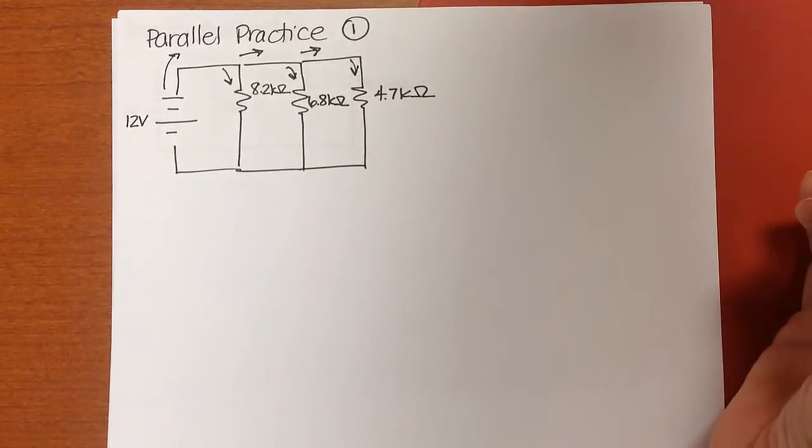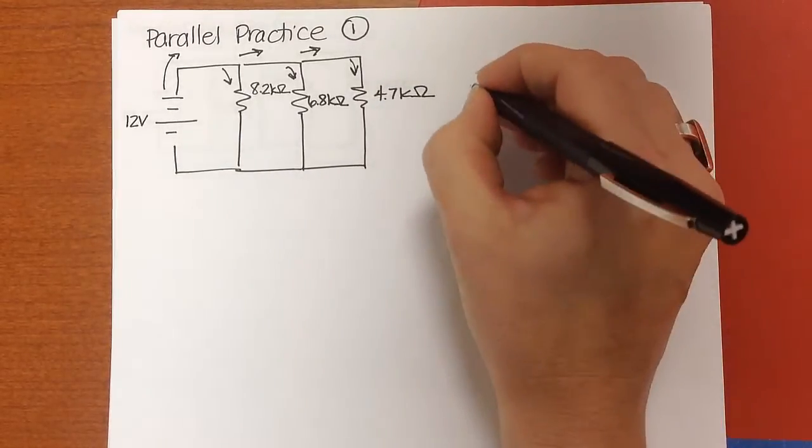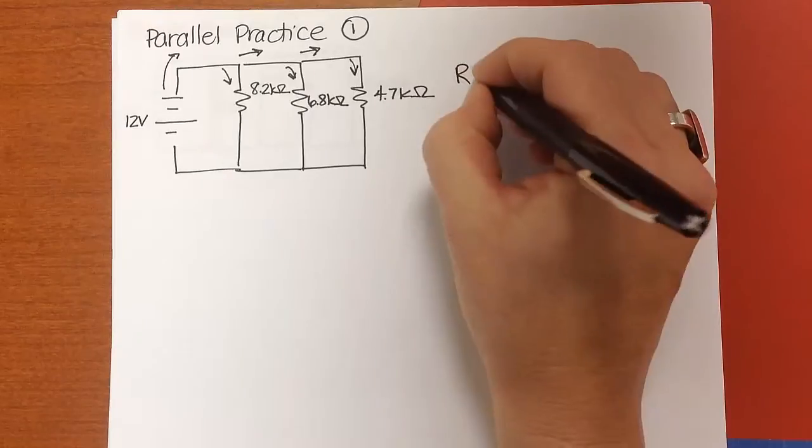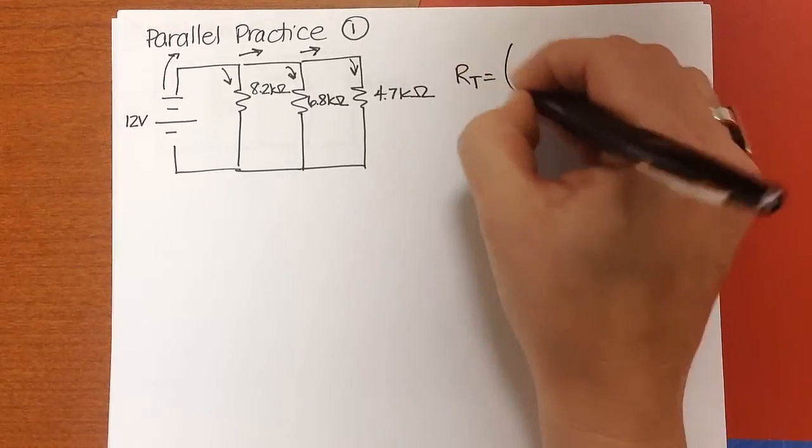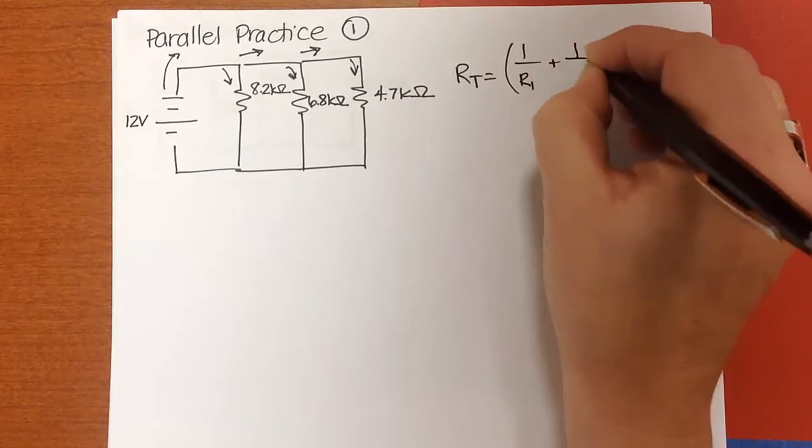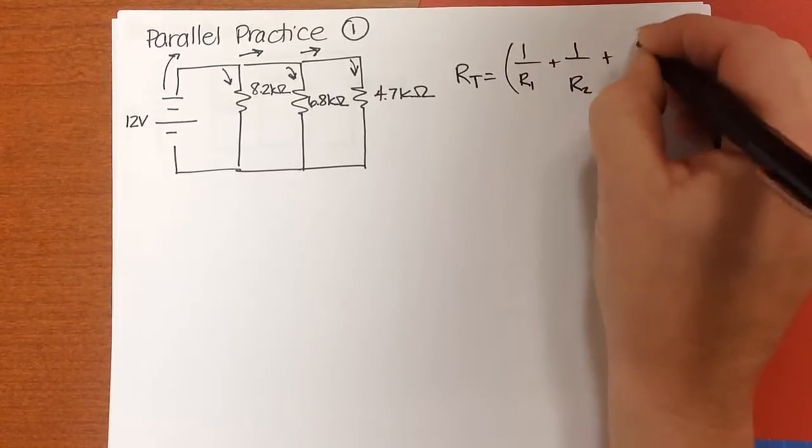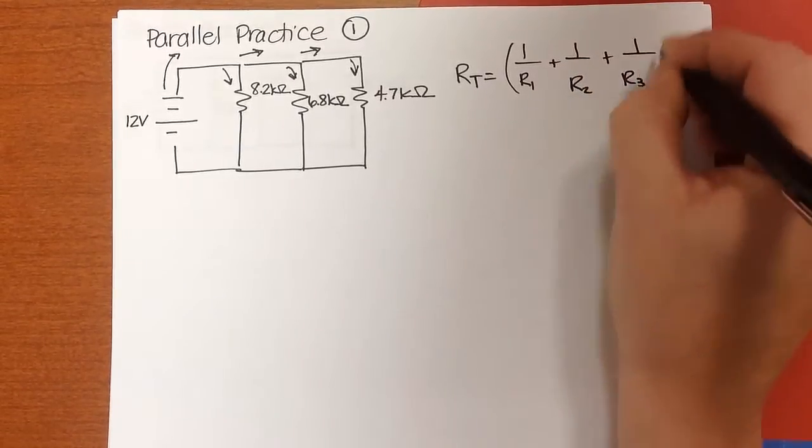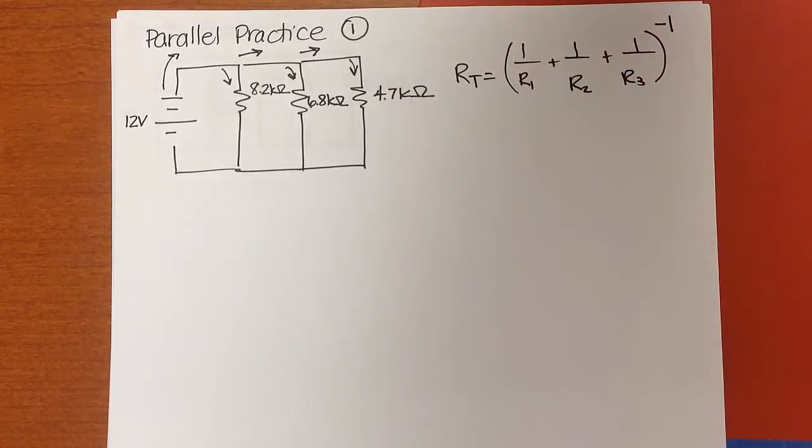So let's start by finding the equivalent resistance, or the total resistance. And it's going to be equal to 1 over R1 plus 1 over R2 plus 1 over R3, all to the minus 1.